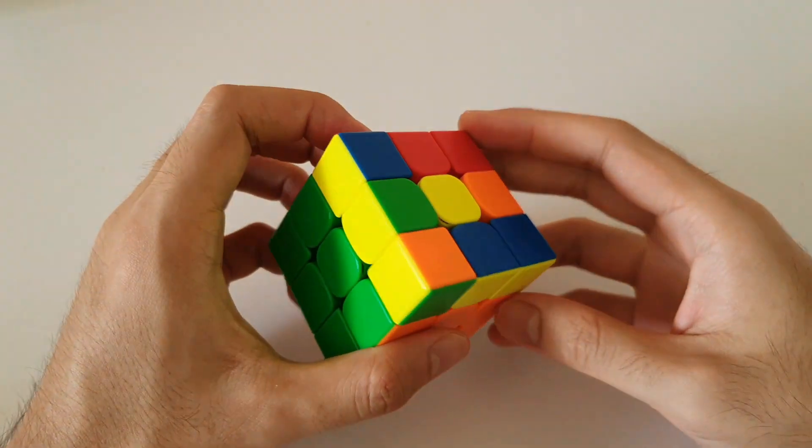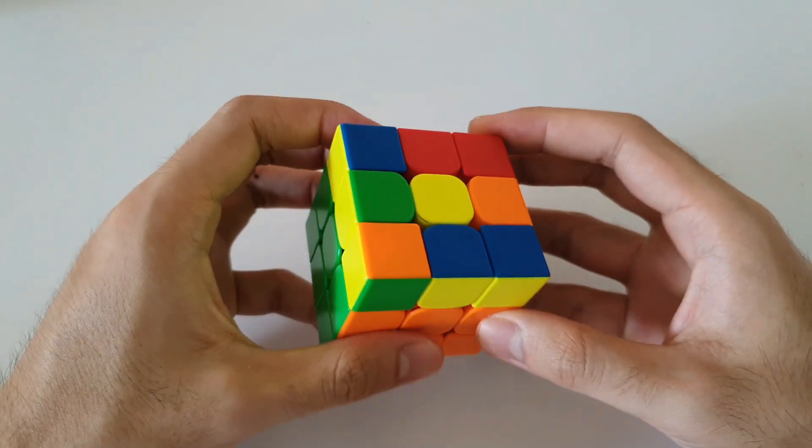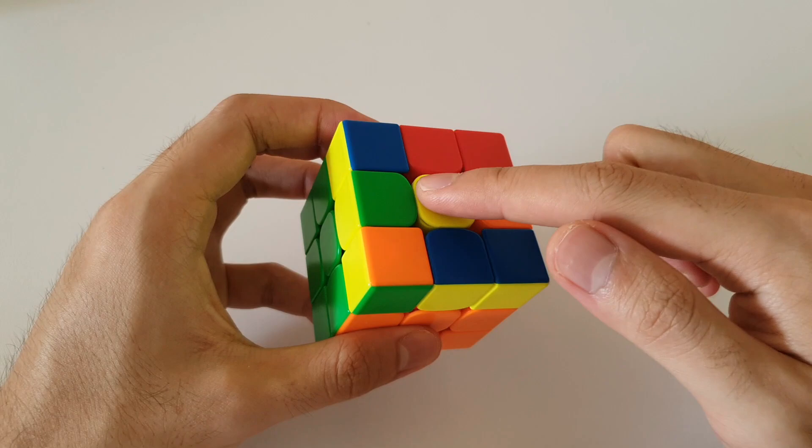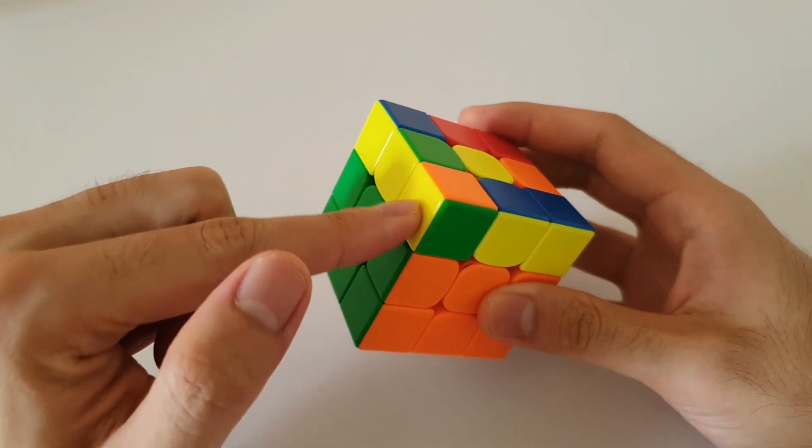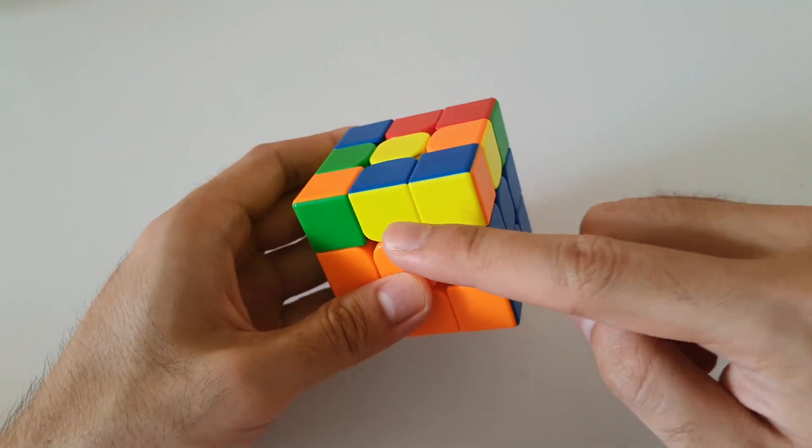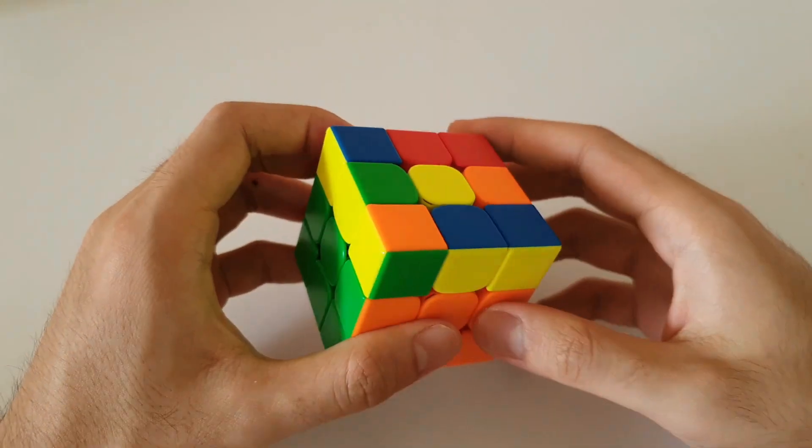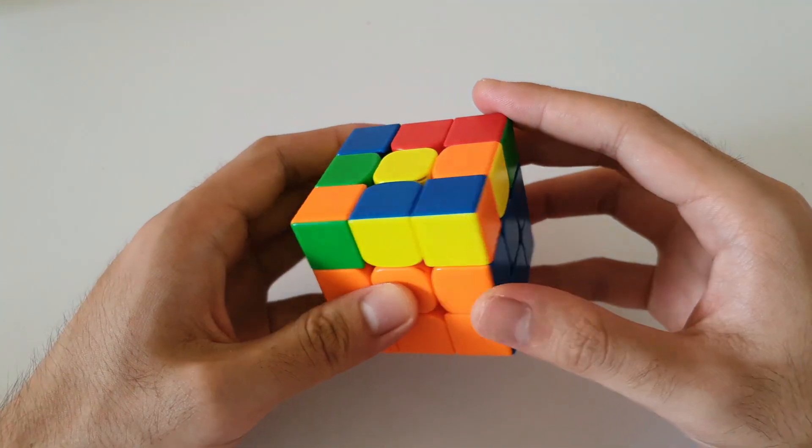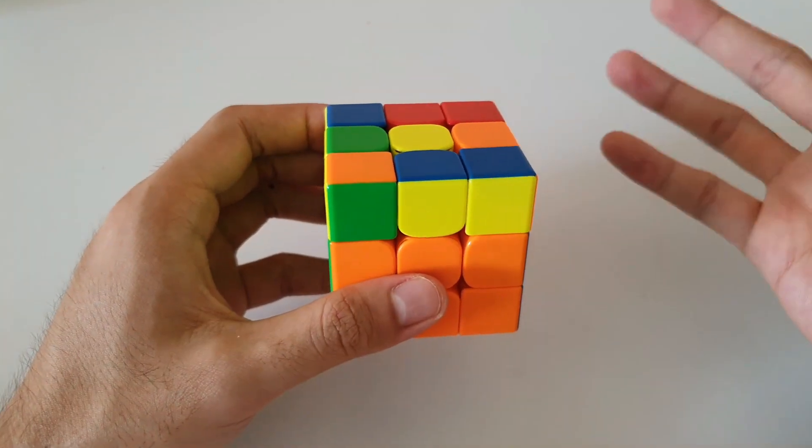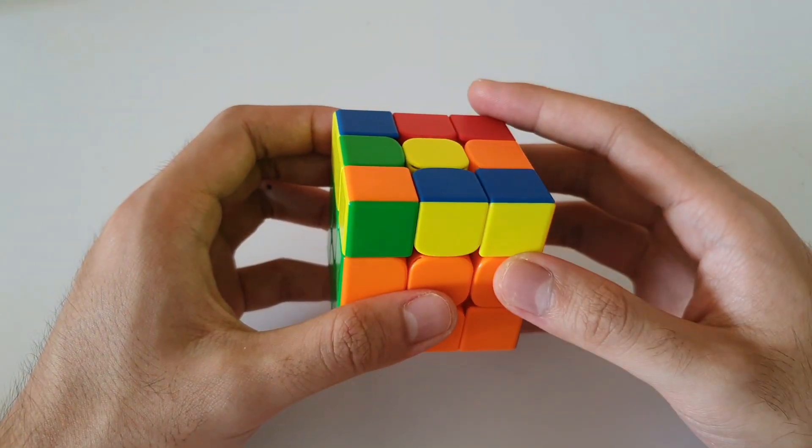The next dot case we have is this one here. Once again recognized by the yellow dot on the top layer. Three by one bar on the left side and these two two by one bars on the front and back. So this is exactly how you want to hold this case. Once again, the algorithm is not too difficult as well.